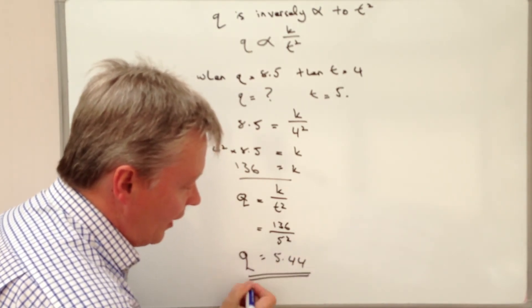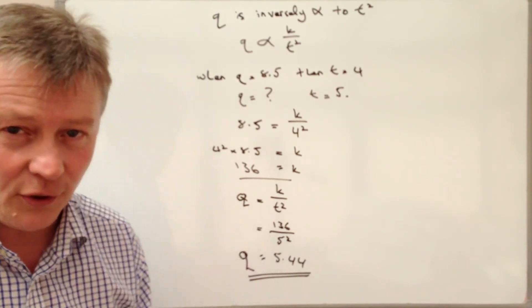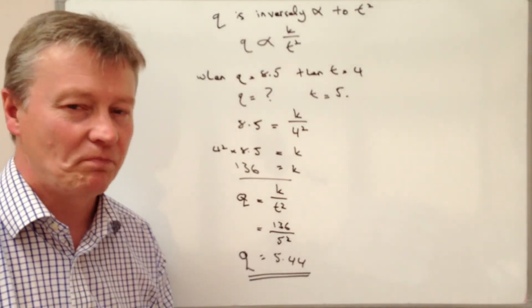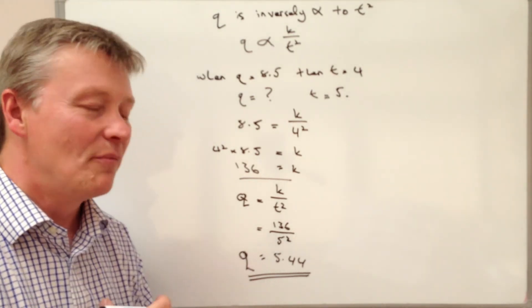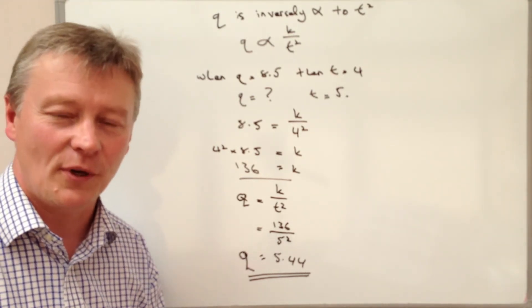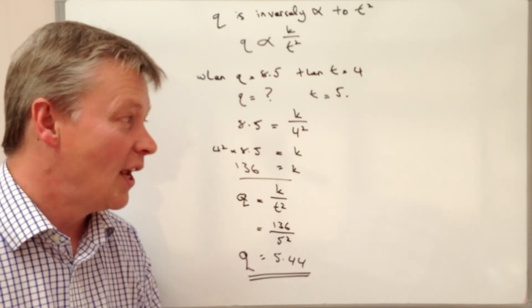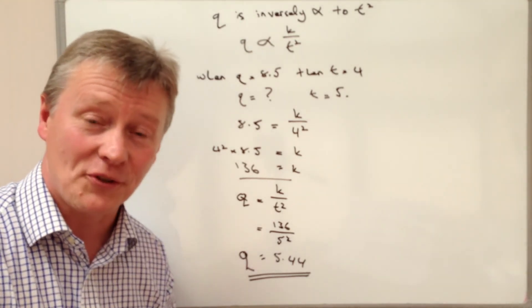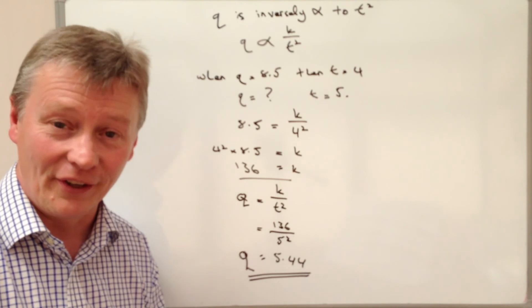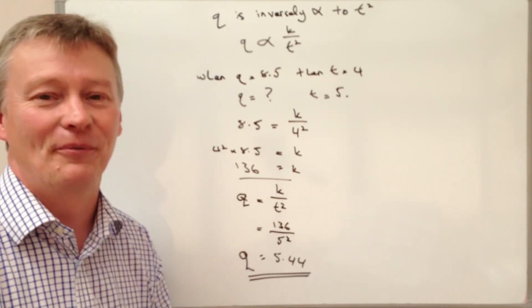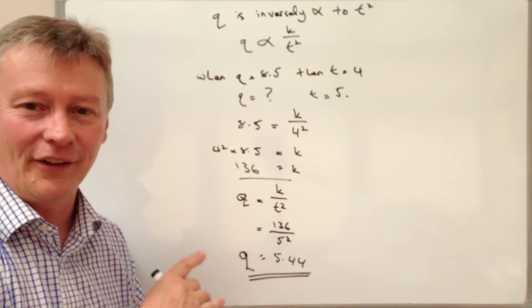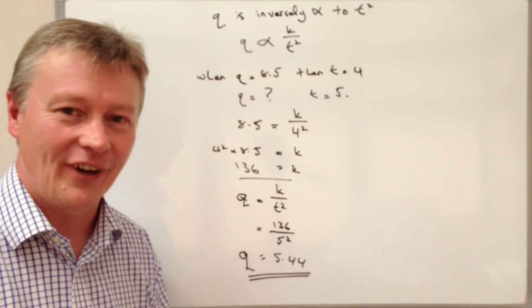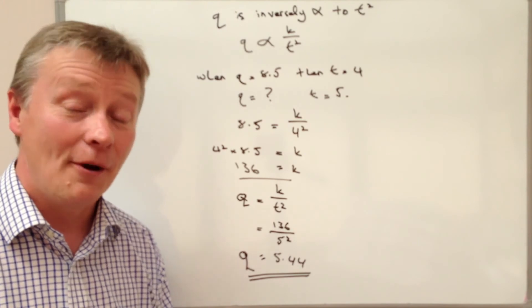And that would be the answer to your question. It might ask you to answer it to two decimal places or three significant figures or something like that, but generally speaking a lot of these questions are largely the same. If you have a look at the quick test on MathsRap, you can have a go at these and you'll see that actually it's quite difficult to come up with different questions. But essentially once you work out the value of K, then it should be fairly straightforward for you.